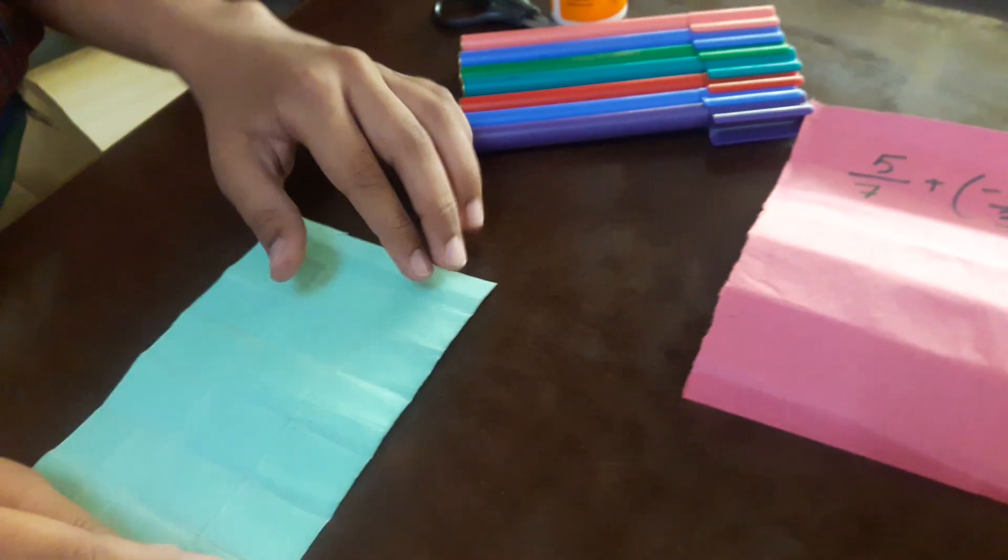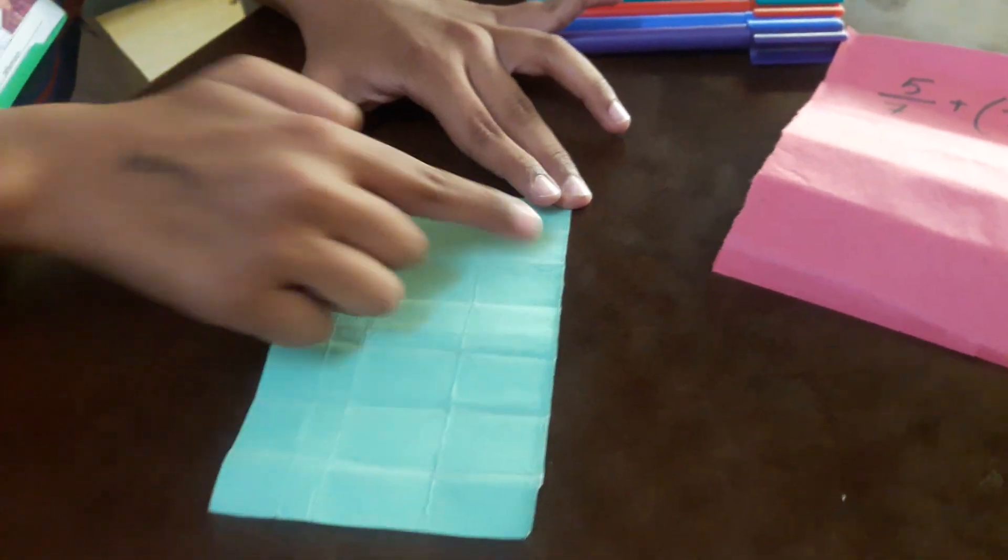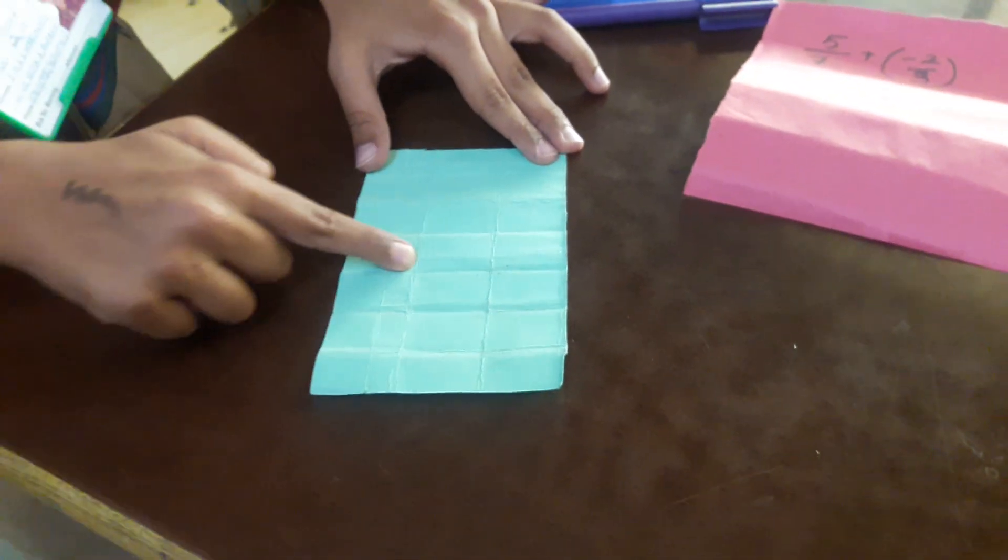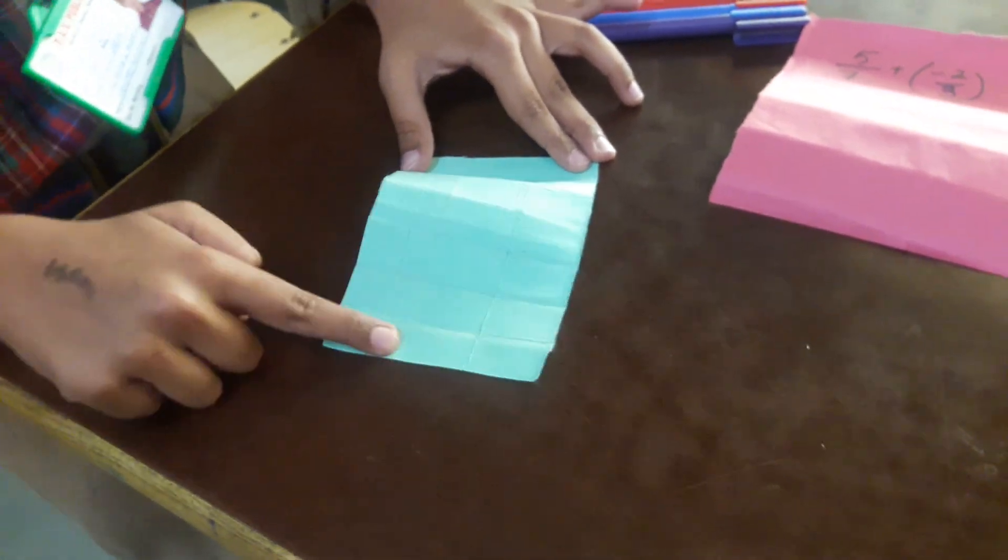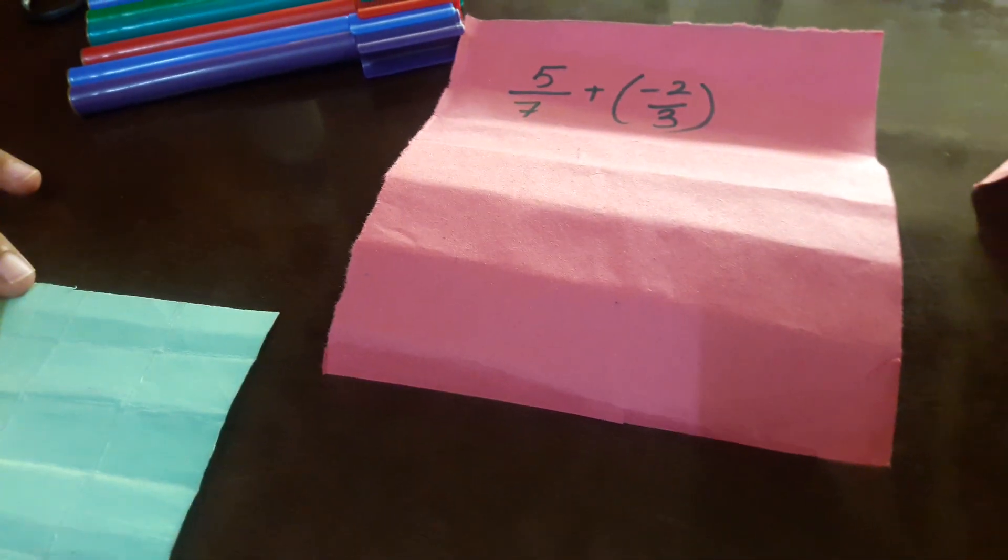First, we will take a rectangular sheet and then divide it into 7 equal parts. 1, 2, 3, 4, 5, 6 and 7. Vertically because the denominator of first rational number is 7.